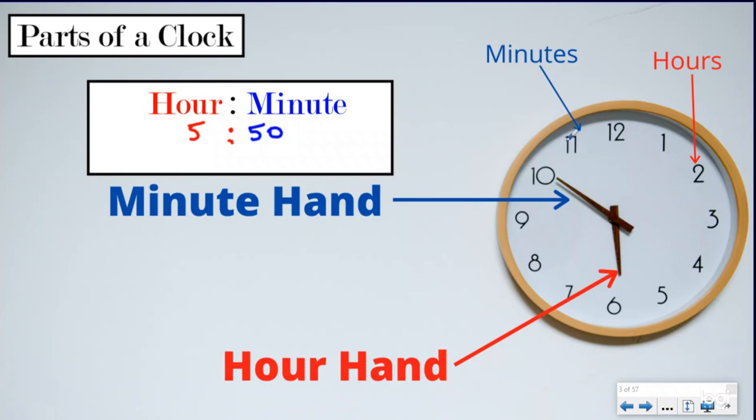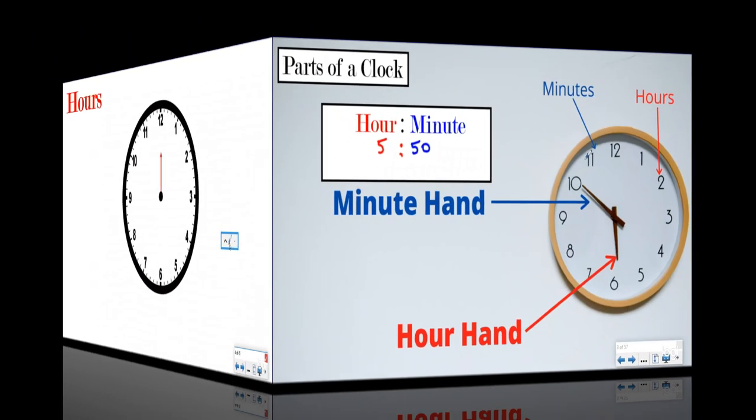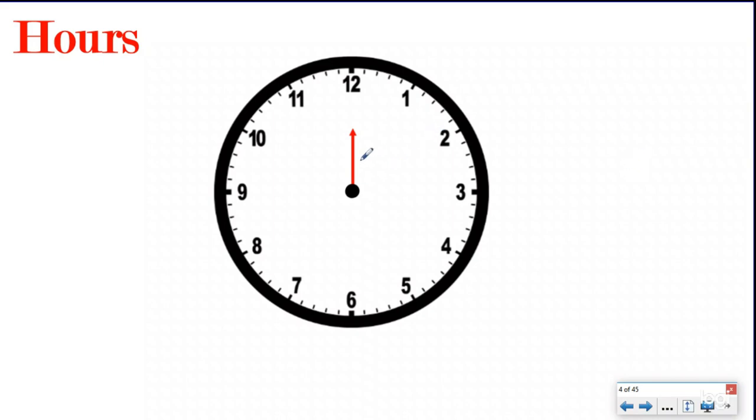Let's take a closer look at how I came up with that answer. So the first thing is our hour hand. Our hour hand is the shorter hand. And our hours, obviously on this clock are 12, 1, 2, 3, 4, 5, 6, 7, 8, 9, 10, 11, and then back to 12.